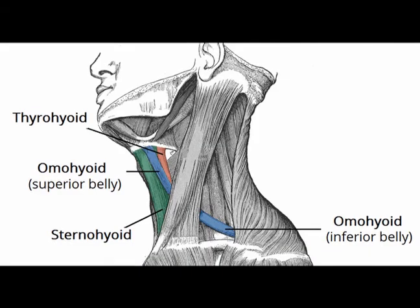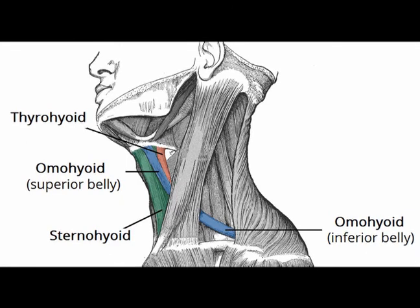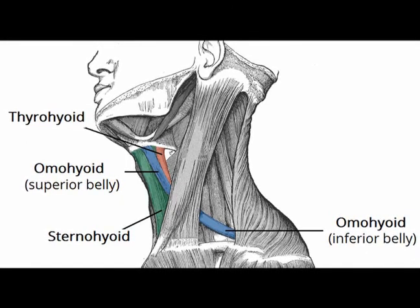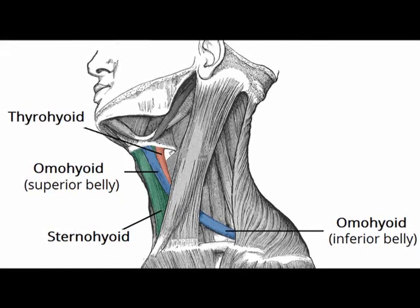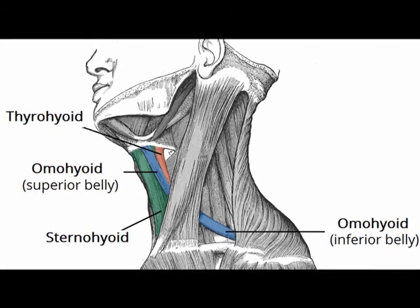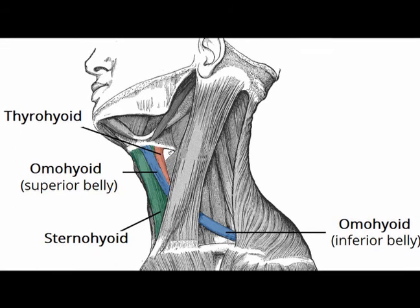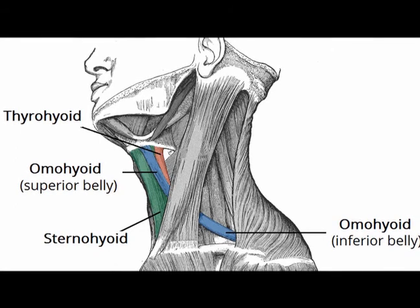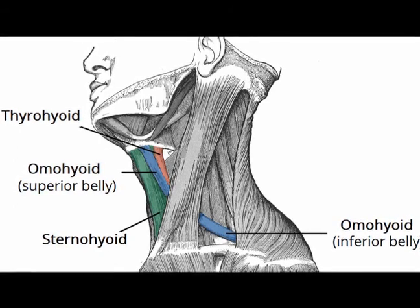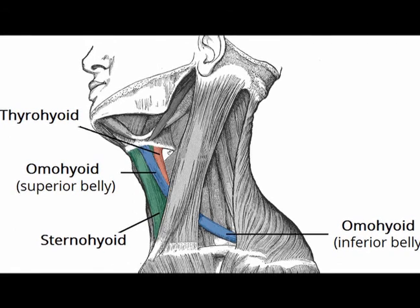The sternothyroid muscle originates on the back of the manubrium and inserts on the oblique line of the thyroid cartilage. And the thyrohyoid muscle originates on the oblique line of the thyroid cartilage and inserts on the inferior aspect of the body of the hyoid.